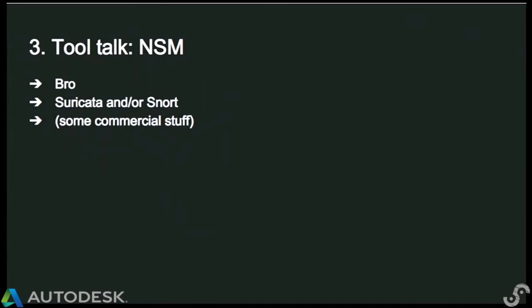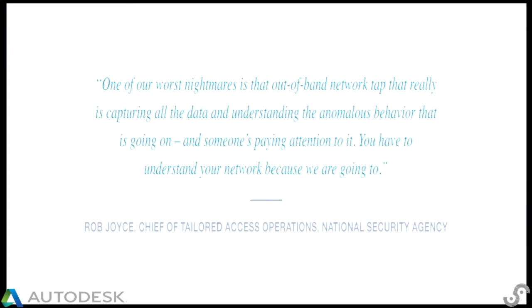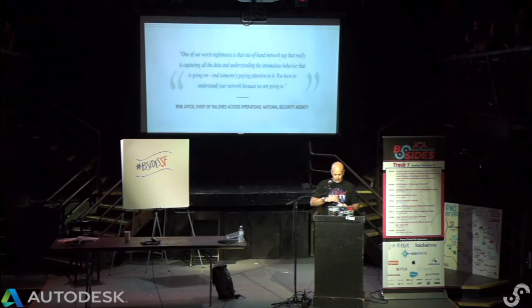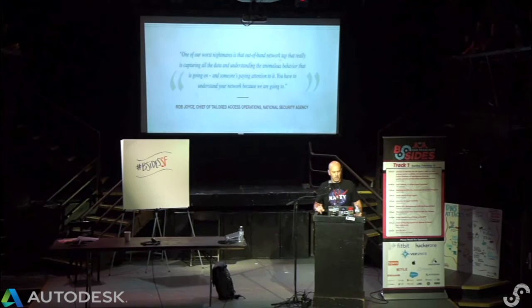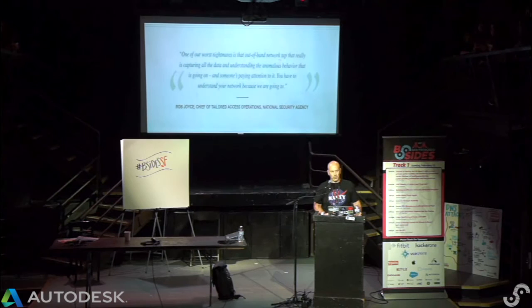Network security monitoring — there's a lot of great commercial stuff out there. I'm a big proponent for Bro. If you need signature-based intrusion detection, Suricata or Snort are good options, both free and/or commercial. At Enigma 2016, the head of Tailored Access Operations — arguably the world's most elite hacking unit — expressed concern about network taps. If they're worried about network taps, arguably everyone else should be too. I'm a big proponent for a client-centric approach to security. There's still a place for NSM — it's belt and suspenders — but it's a good thing to have after you build client instrumentation.